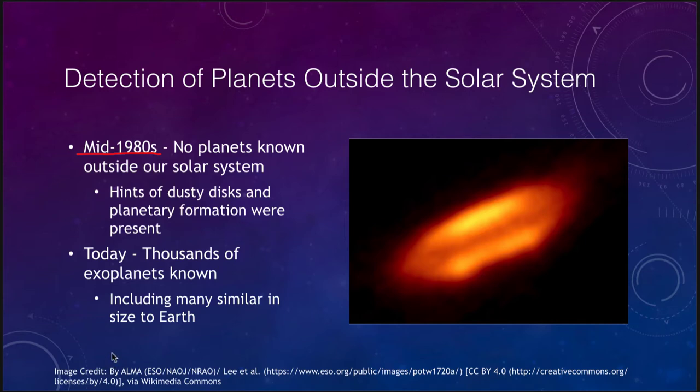However, we were getting some very good hints. We were seeing things like dusty disks of material that gave us the ideas that maybe planetary formation was ongoing in these systems. So we were getting ideas as to the fact that solar systems might be forming elsewhere, but we didn't know of any planets that existed outside of our own solar system until the late 1980s.